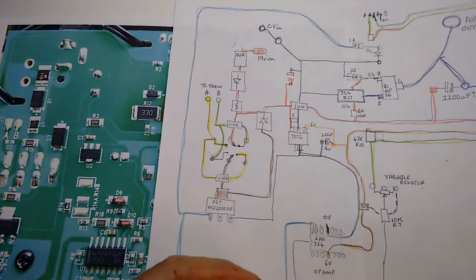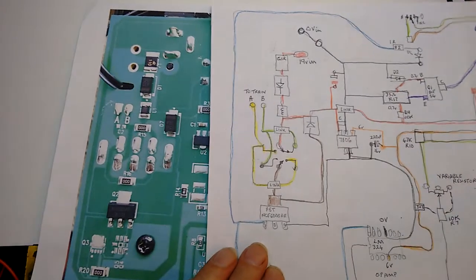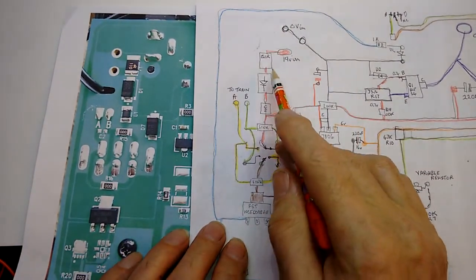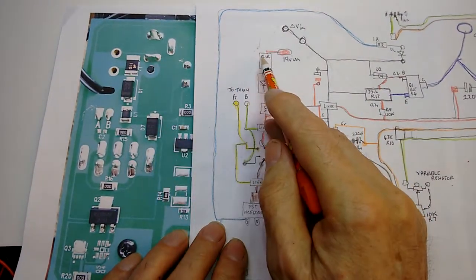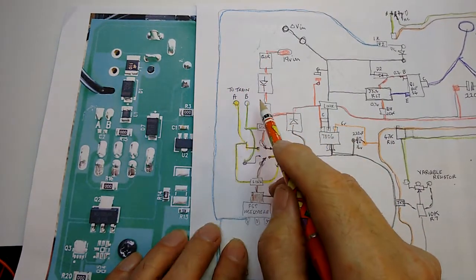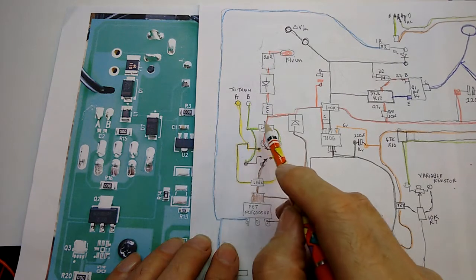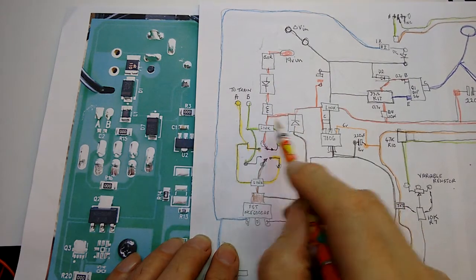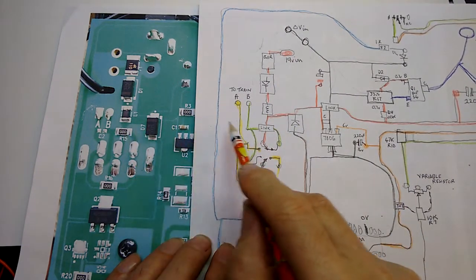What I did then was to draw this out. Maybe I didn't explain it clearly enough. Essentially what I've got here is these components - this one, this one, this, this, and that. That's the link there. And then here we've got the changeover switch.